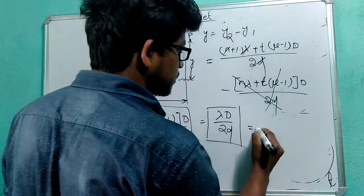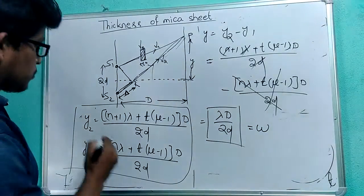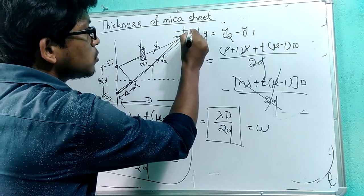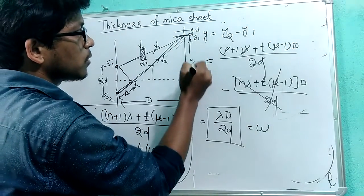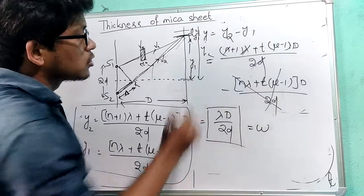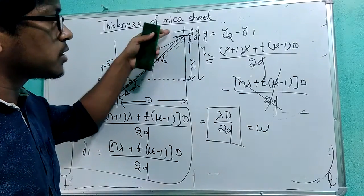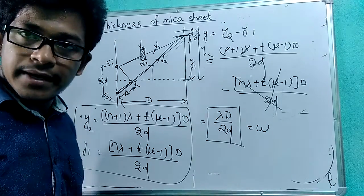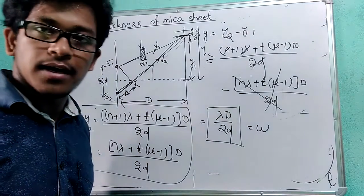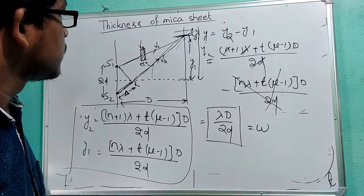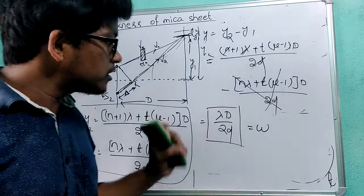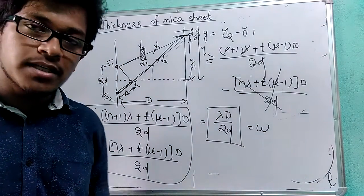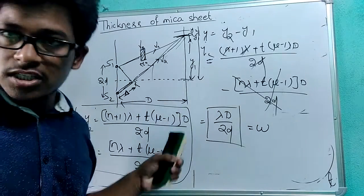So the distance between two consecutive fringes is the fringe width omega = lambda·D / d. This is how you get the fringe width. Now I am going to measure the thickness of the mica sheet without using a slide caliper — we will measure the thickness just by this Young's double slit experiment or the biprism experiment.